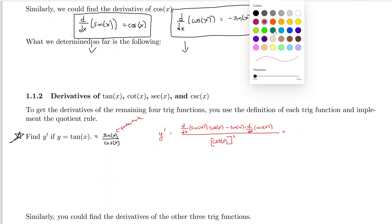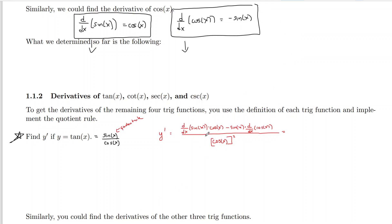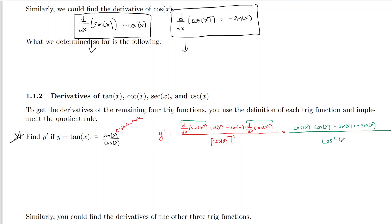Just like last section when simplifying with the quotient rule, it doesn't matter what functions are in it — trig, exponential, or power functions — we do it the same way. The derivative of sine of x is cosine of x, and the derivative of cosine of x is negative sine of x. Simplifying, we get cosine squared of x plus sine squared of x over cosine squared of x, and we write cosine squared using trig notation as cos²(x).